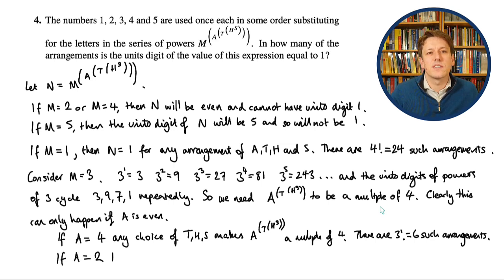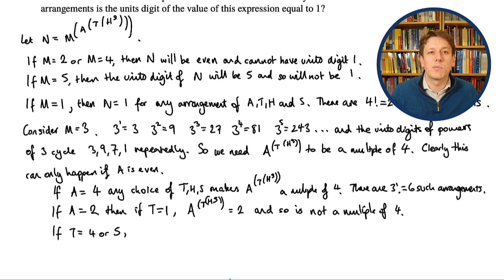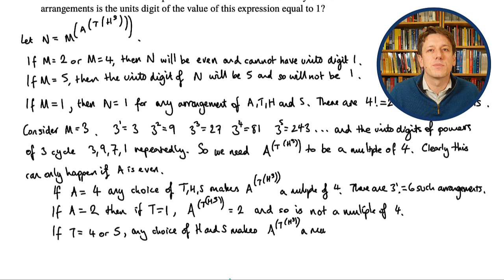And then the final case we've got to consider is when a equals 2. Now this one's slightly harder, because if t is 1, then a to the t to the h to the s will be 2 to the 1 to the something, so it'll just be 2 to the 1, which is 2, and so that won't be a multiple of 4. But if t equals 4 or 5, which remember are our other choices, because we've got m is 3 and a is 2 here, so t has to be 1, 4, or 5, then any choice of h and s that follows will make a to the t to the h to the s a multiple of 4. That's because I will have 2 to a power that's bigger than 1, so there'll be at least a 2 times 2 if I wrote it all out as a power of 2, so it'll be at least a multiple of 4.